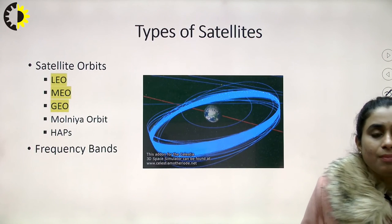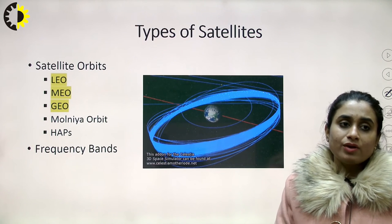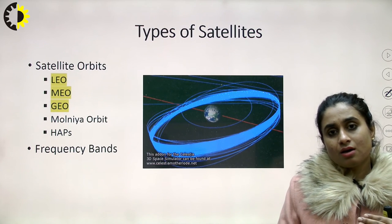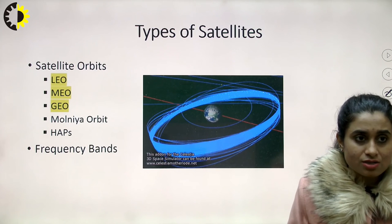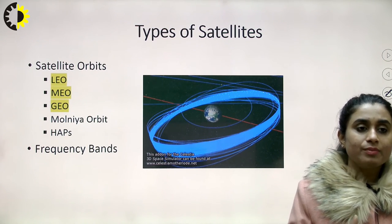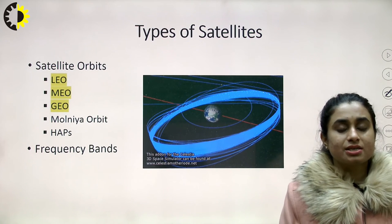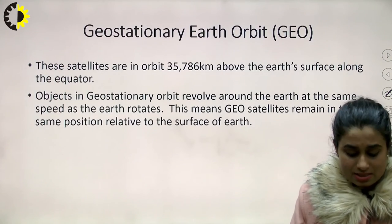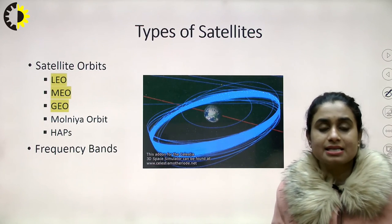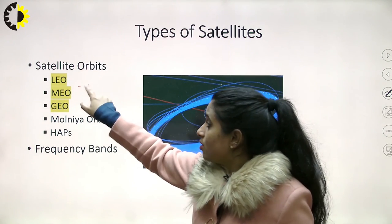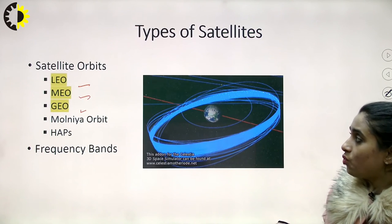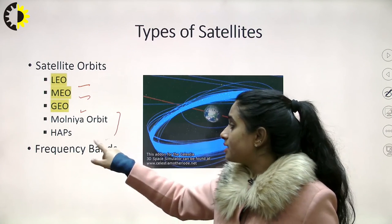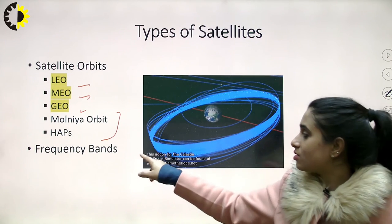If we talk about the various types of satellites, we classify them on the basis of orbits where they are launched. We have Low Earth Orbit (LEO), Medium Earth Orbit (MEO), and Geostationary Earth Orbit (GEO) — classified on the basis of the height of the satellite's orbit. Apart from these three basic orbits, there are other orbits as well, called Molnia orbit and HAPs, and we will also be talking about various frequency bands.